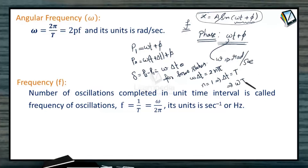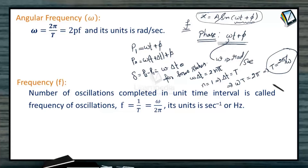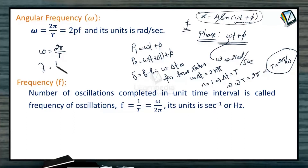So omega times capital T is 2 pi, which gives T equal to 2 pi divided by omega. The time period is 2 pi by omega. Here omega is known as angular frequency, written as 2 pi divided by capital T. One divided by capital T is frequency, which can be written as nu.